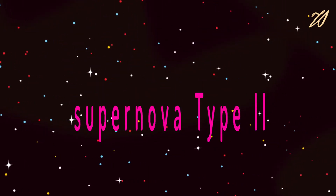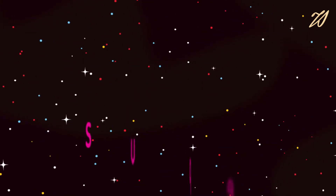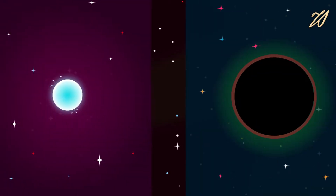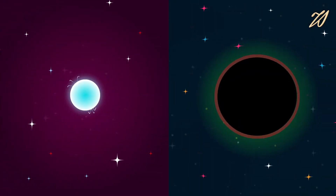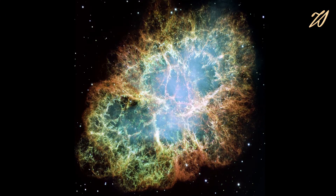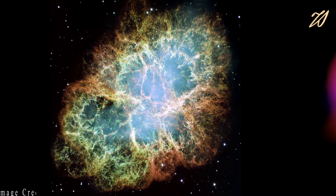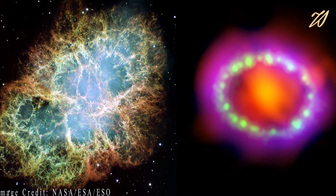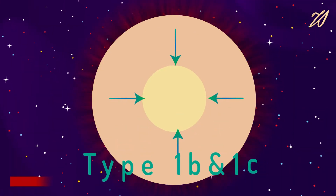Depending on the initial mass of the star, the core may become a neutron star or a black hole. The Crab Nebula and SN 1987A are two examples of such supernovae.